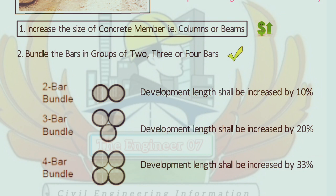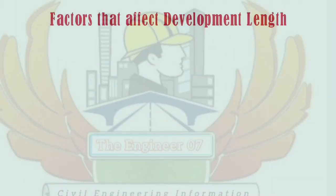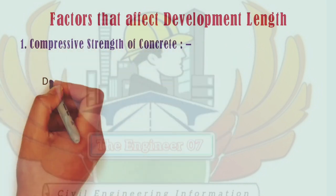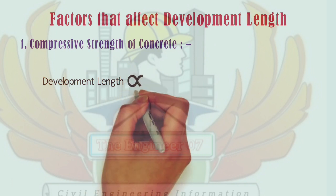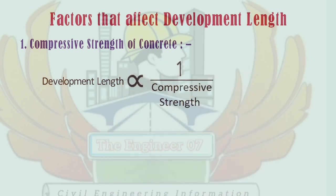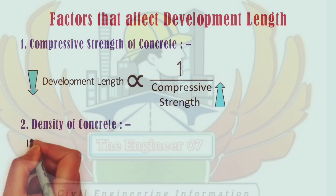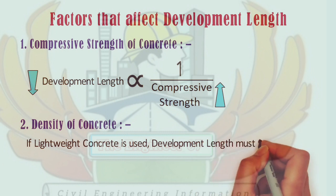Now let us understand the factors that affect development length. Factor 1: Compressive strength of concrete. The development length required for a rebar is inversely proportional to the compressive strength of concrete, meaning if the compressive strength is higher, the required development length is less. Factor 2: Density of concrete. If lightweight concrete is used, the development length must be increased.